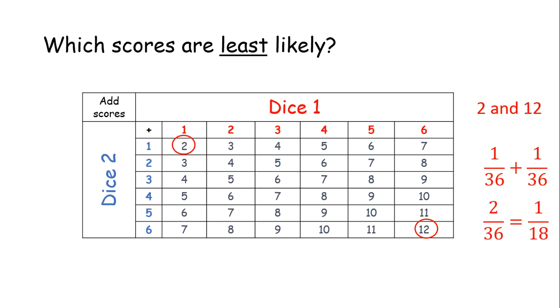So, if we add those two scores together, we get two out of 36, scoring two and 12. And the probability of getting our least likely score is going to be 1/18th, but obviously, two on its own would be 1/36th, and 12 on its own would be 1/36th.